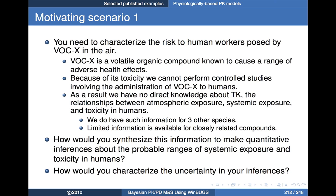The first scenario involved a volatile organic compound — we'll call it VOCX. We need to characterize the risk of environmental exposure to human workers from VOCX vapors in the air. It's known to cause a range of adverse health effects, and because of its toxicity, we can't perform controlled studies administering VOCX to humans. As a result, we have no direct knowledge about the toxicokinetics of VOCX, nor the relationships between atmospheric exposure, systemic exposure, and toxicity in humans.